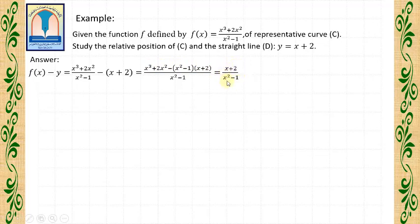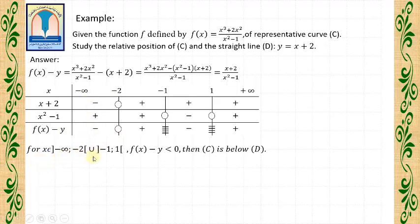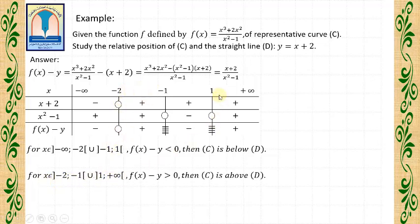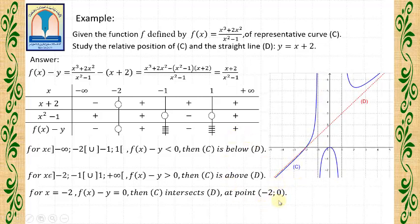Now we make the sign table for (X + 2) / (X² − 1). X + 2 has minus 2 as a root. X² − 1 has two distinct roots: minus 1 and 1. This gives us the sign of F(X) minus Y. For X belongs to (minus infinity, minus 2) union (minus 1, 1), F(X) minus Y is negative, so C is below line D. For X equals minus 2, F(X) minus Y equals 0, so C intersects line D at point (minus 2, 0). We replace X = minus 2 in the equation of line D to get the point of intersection. We can also see this result graphically.